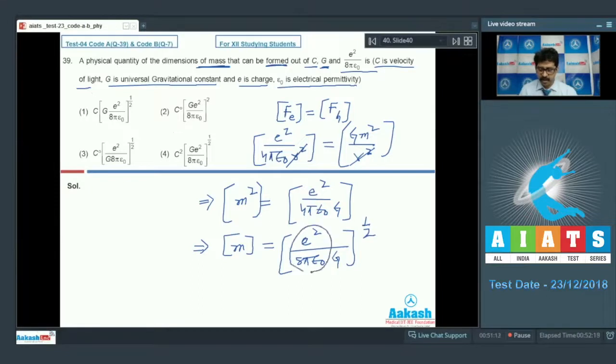So m's dimension, I have e square upon 4 pi epsilon knot. 2 multiply, so that is not possible. G raised to the half. So e square upon 4 pi epsilon knot, I have given it already. G has given it. So c has no role. This means c raised to the power of 0. So correct option is option number 3.